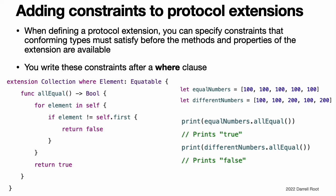Adding constraints to protocol extensions. When you define a protocol extension, you can specify constraints that conforming types must satisfy before the methods and properties of the extension are available. You write these constraints after the name of the protocol you are extending by writing a generic WHERE clause. For example, you can define an extension to the collection protocol that applies to any collection whose elements conform to the equatable protocol. The all-equal method returns true only if all the elements in the collection are equal. Because arrays conform to collection and integers conform to equatable, equal numbers and different numbers can use the all-equal method. Note: if a conforming type satisfies the requirements for multiple constrained extensions that provide implementations for the same method or property, Swift uses the implementation corresponding to the most specialized constraints.